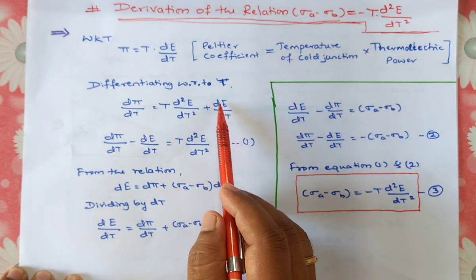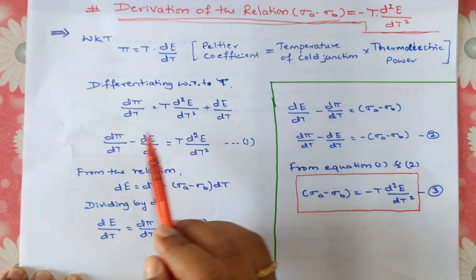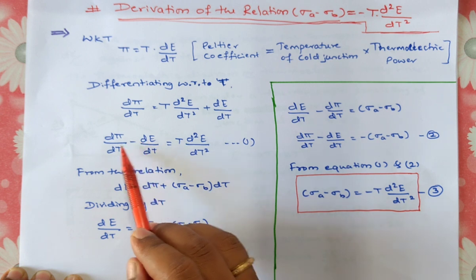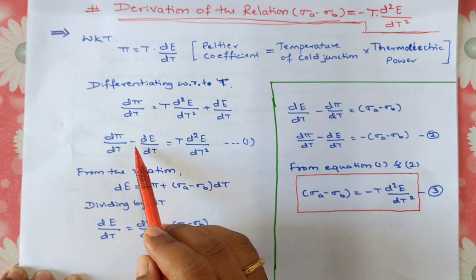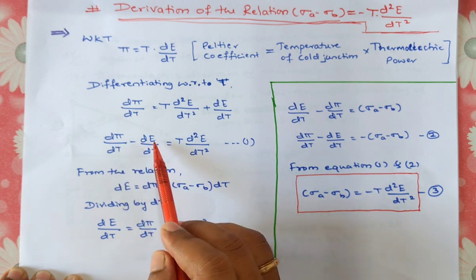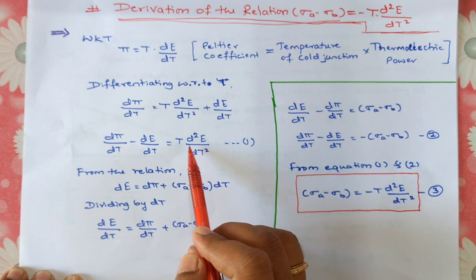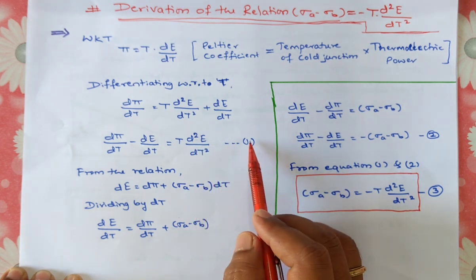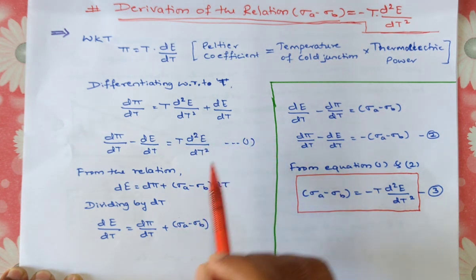Now I am going to take d e divided by dt to the left hand side. So d pi divided by dt minus d e divided by dt is equal to t into d square e divided by dt square. This is equation number 1.